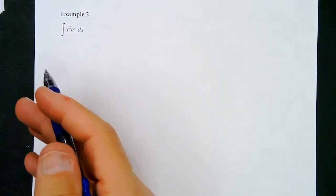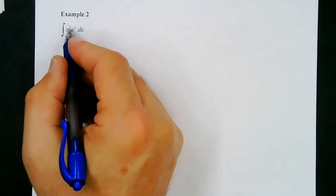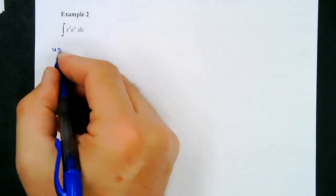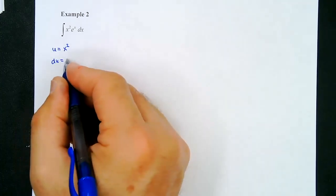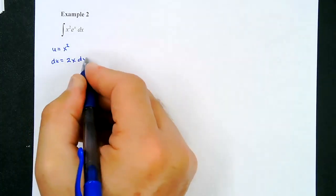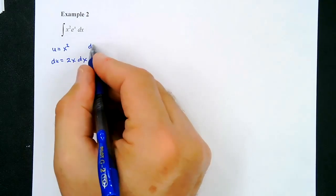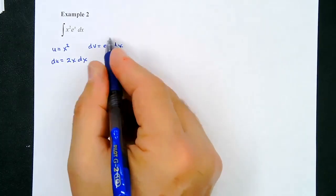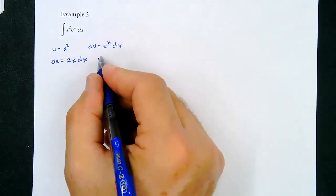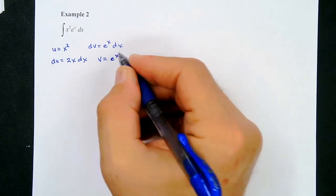Following LIPIT: no logarithms, no inverse trig functions, but we do have a polynomial — x². So we let u equal x², and du equals 2x·dx. We let dv equal eˣ·dx. That's easy to integrate: the integral of eˣ is eˣ, so v equals eˣ.